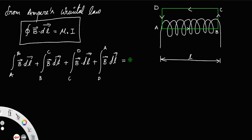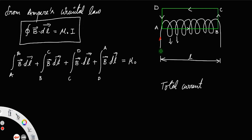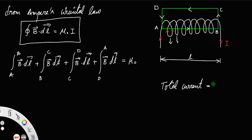On the right-hand side, we have μ₀ times the total current. The total current I equals n times I, because there are n number of turns and each turn carries a current, so the total current is equal to nI.